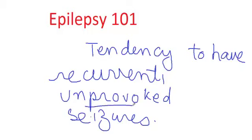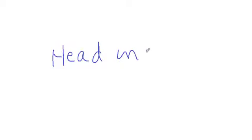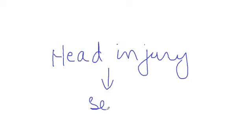What does the term unprovoked mean? The term unprovoked basically means that there is no acute insult that caused a seizure. Let's say somebody has a serious head injury and a lot of bleeding in the brain, and that leads to a seizure. Would this be a provoked seizure or an unprovoked seizure? The answer is: there was a head injury that led to the seizure at the time of the head injury, so this is a provoked seizure.